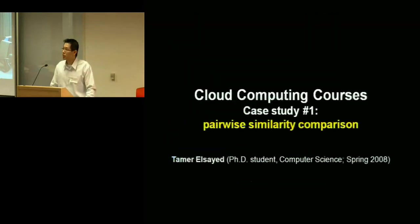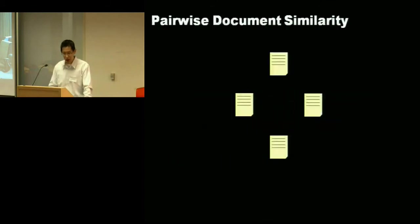So what am I gonna do now is spend the next few minutes presenting some case studies of some research that actually came out of the first iteration in spring 2008. So the first one I wanna talk about is the problem of pairwise similarity comparison. The student is Tomer Alciate and he's actually finishing up his dissertation in a month. So this is, I think, a success story for the academic cloud computing initiative. He's a PhD student in computer science.